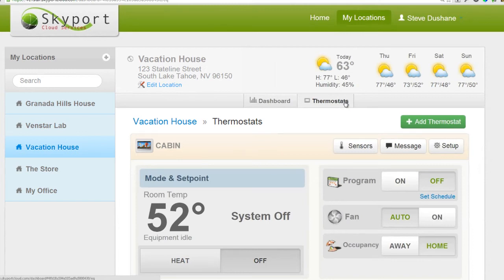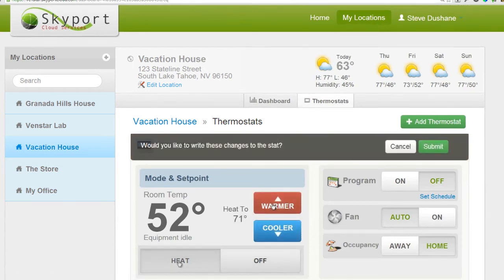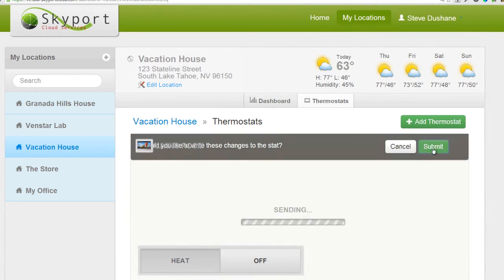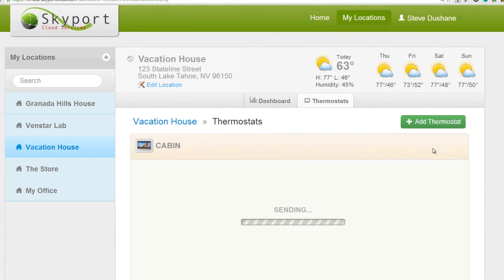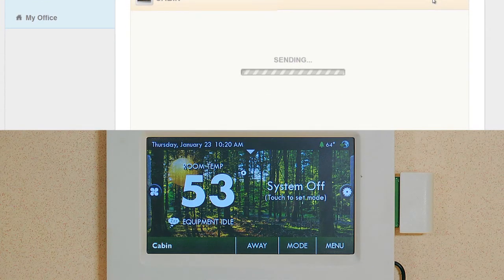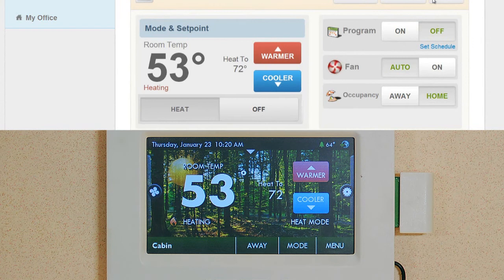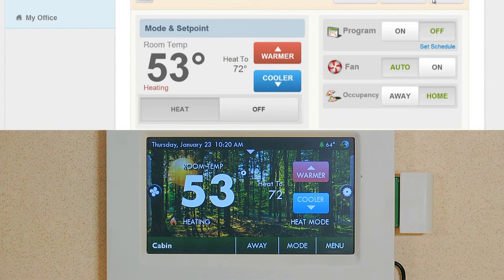As you can see, it is a brisk 52 degrees at the cabin. I'm heading up for the weekend, so let's turn the heat on so it will be nice and warm when I arrive. Simply press the heat button. Select your desired temperature. I like 72. Hit the Submit button and you will see that it will update the Color Touch in real time. The heat is now turned on and it will heat until it reaches 72 degrees.